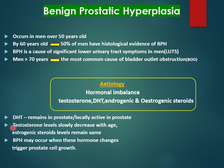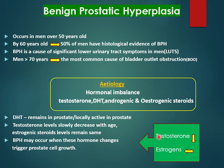Testosterone levels slowly decrease with age, while estrogenic steroids remain the same. Therefore, there is a relative increase in estrogenic effects. BPH may occur when these hormonal changes trigger the growth of prostate cells. So: testosterone decreases with age, estrogen remains normal, and the relative increase in estrogen triggers prostatic cell growth, leading to BPH.